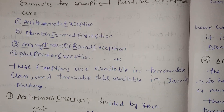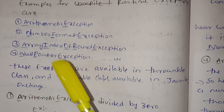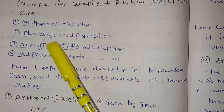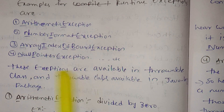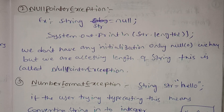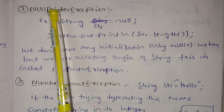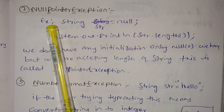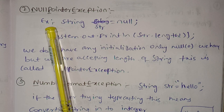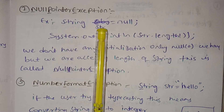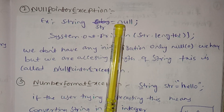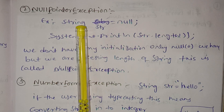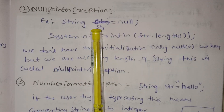Now we have the NullPointerException. Then we have the number array. Here is the NullPointerException. For the first example, string str is null — string is the data type and str is the variable name.